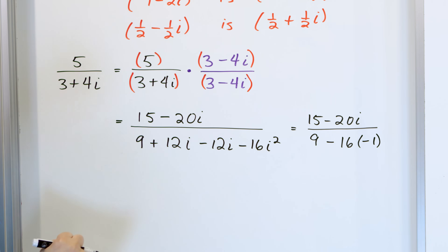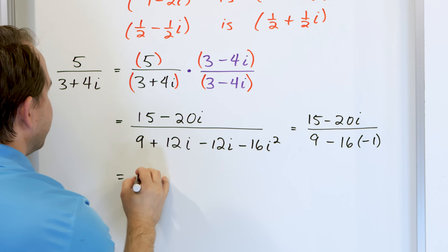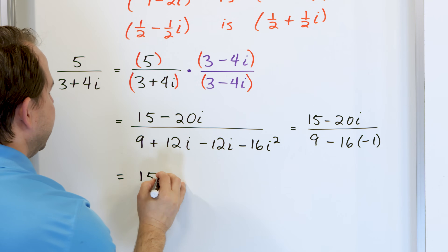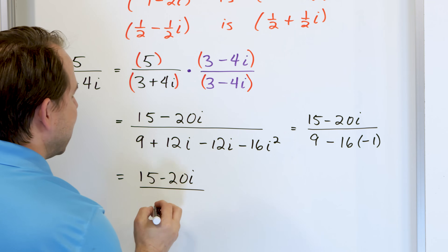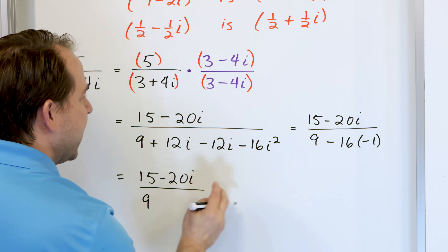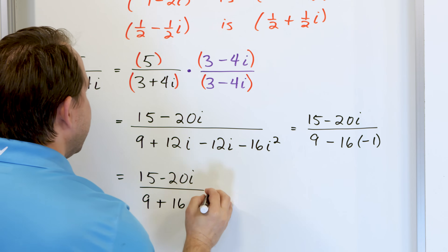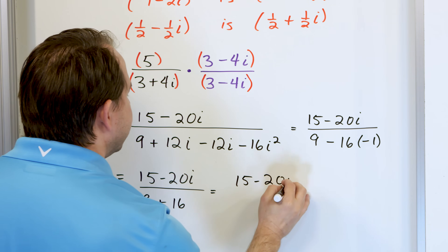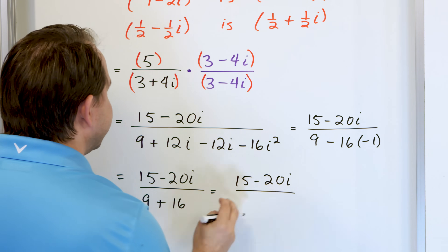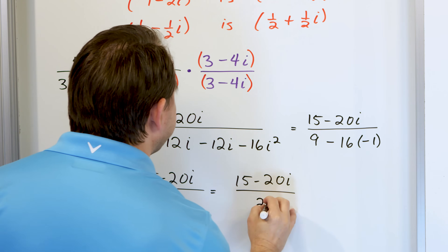For the next step we have fifteen minus twenty i in the numerator, and in the bottom we have nine. The twelve i terms cancel away, and we substitute i squared with negative one, giving us a minus and then sixteen. So we have fifteen minus twenty i over nine plus sixteen.